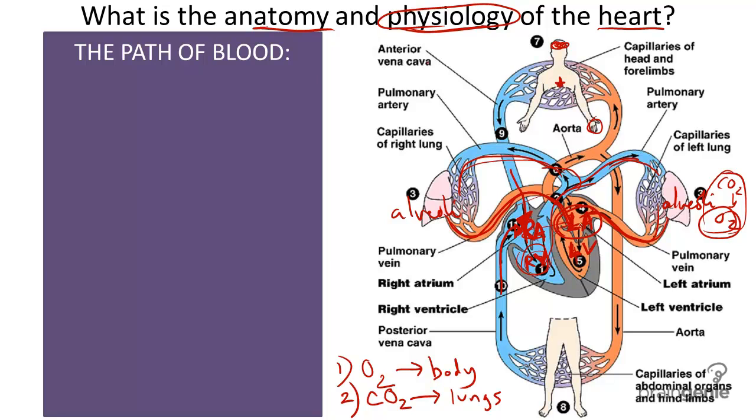So the left atrium just receives oxygenated blood. And so you can see on the left side of this heart, we've got all oxygenated blood. From the left atrium, we travel to the left ventricle, through a valve again.